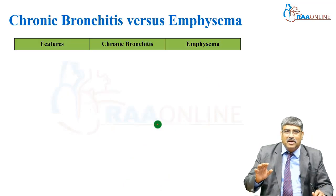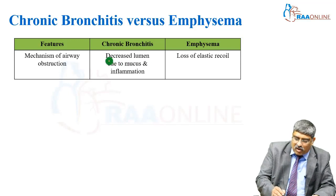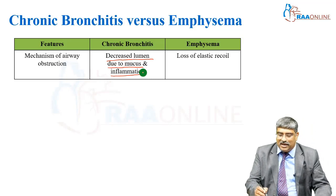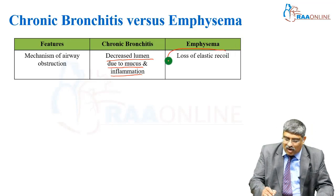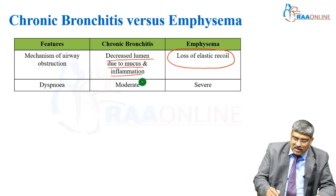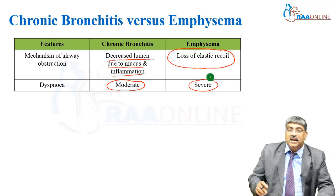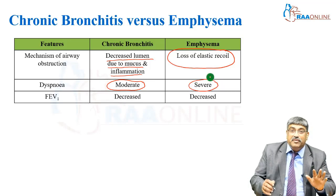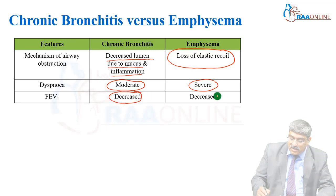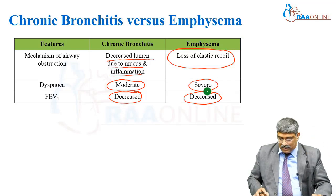Comparing chronic bronchitis and emphysema: the mechanism in chronic bronchitis is decreased lumen due to mucus and inflammation, whereas in emphysema it is loss of elastic recoil. Dyspnea is moderate in chronic bronchitis but severe in emphysema. FEV1 is decreased in both — in both obstructive diseases, FEV1 will be decreased.